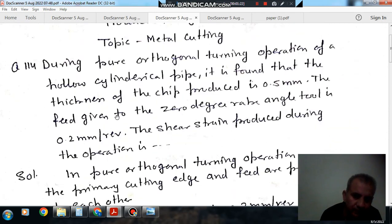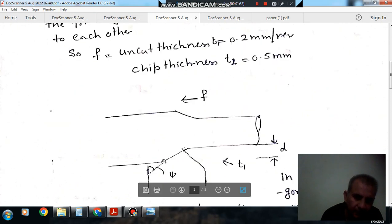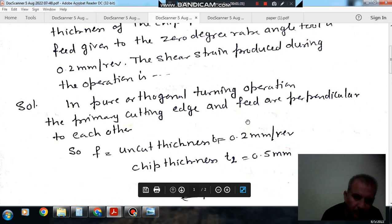So here the feed is 0.2 mm per revolution, so that is your uncut thickness, so that is 0.2 mm per revolution. So, primary cutting edge, this is your primary cutting edge, and feed are perpendicular.